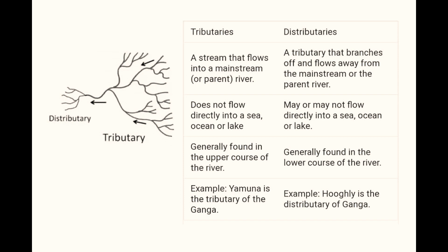Tributaries are mostly found in the upper course of the river, and distributaries are found in the lower course of the river. An example of a tributary is Yamuna, which is the tributary of Ganga, and an example of a distributary is Hukali, which is the distributary of Ganga. Thank you.